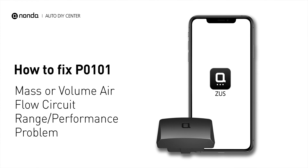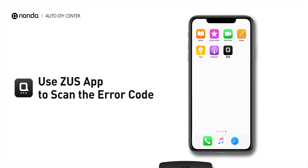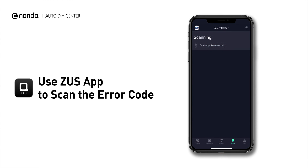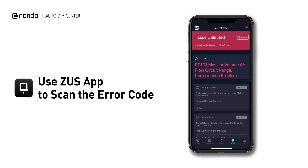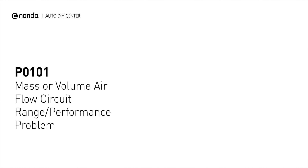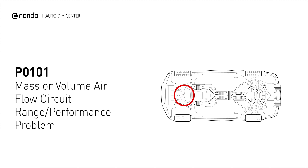If you are getting a P0101 error code, this video is going to show you one practical solution to fix the error code at home. Use the Zeus app to scan your vehicle and see the error code P0101. This code is sent when the measurement of air entering the engine by the mass airflow sensor is outside of the manufacturer's specified range.